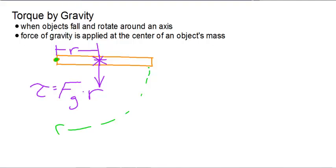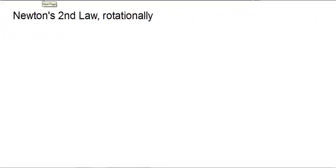If it was rotated about a point here instead, then our r value would be smaller. So r is the distance from the axis of rotation to where the force is applied. If we're talking about an object falling, that force that's applied is the force of gravity.